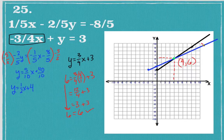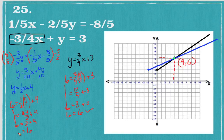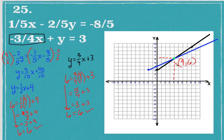Now checking the blue line: y equals 6, one-half times 4 plus 4 equals 4 over 2 plus 4, which is 2 plus 4 equals 6. Yes, 6 equals 6. The coordinate point (4, 6) is the point of intersection where both lines meet, and it is a solution for both equations. Everything checks out — this coordinate point is the solution for this system of equations.